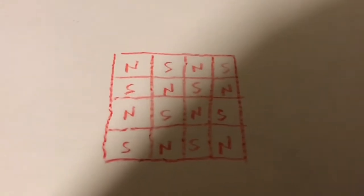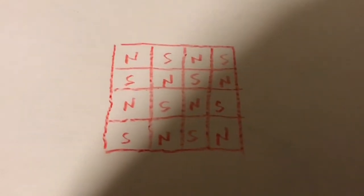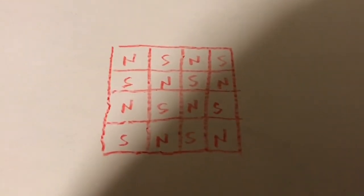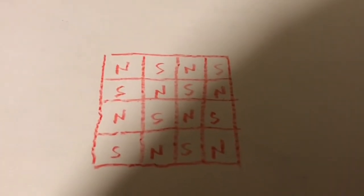If one takes a bunch of neodymium cube magnets and arranges them so the poles alternate north-south-north-south in a square, and you can make that square as big as you want,